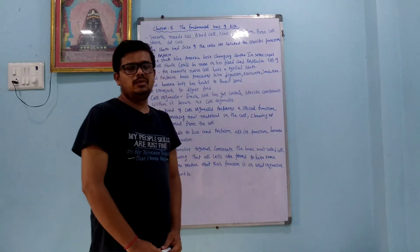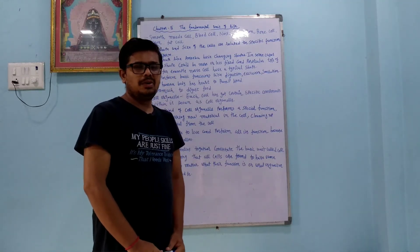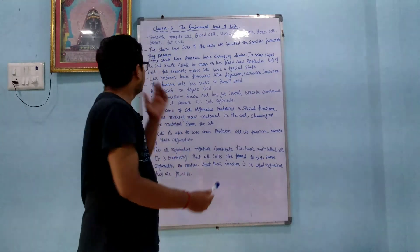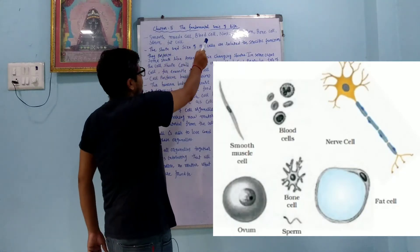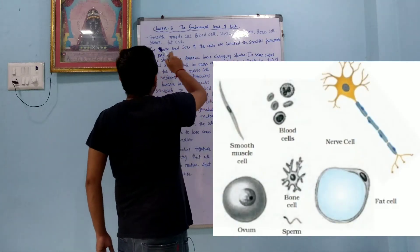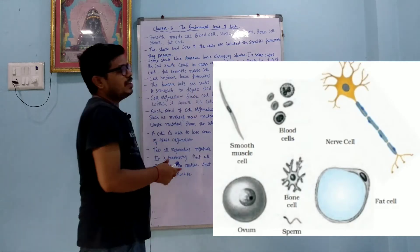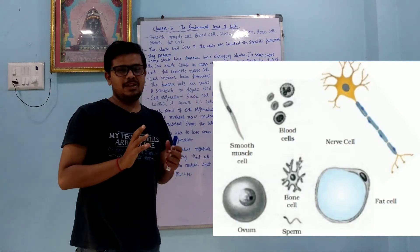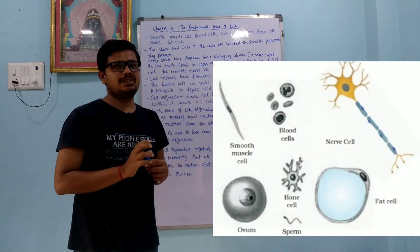Now we are going to learn about the cell and the different functions of the cell. Some examples of human cells are: smooth muscle cell, blood cell, nerve cell, ovum, bone cell, sperm, and fat cell. They have different shapes and sizes and also different functions.